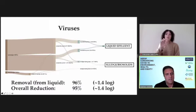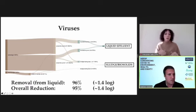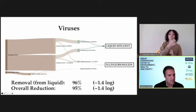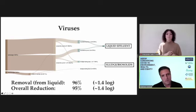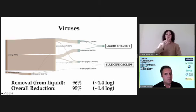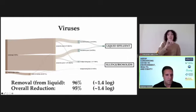This is an example of that output for the system in Kampala, Uganda, where the system treats both sewage and fecal sludge from on-site sanitation technologies. This chart shows the prediction of how viruses flow through the system — the viruses tend to end up more in the liquid effluent rather than the sludge and the biosolids.